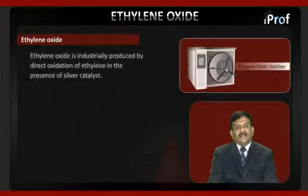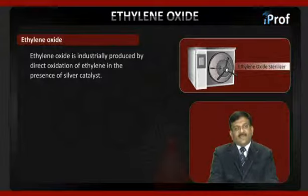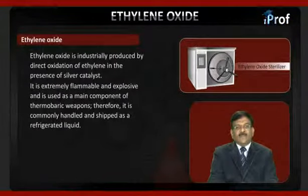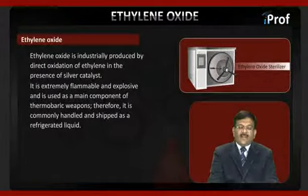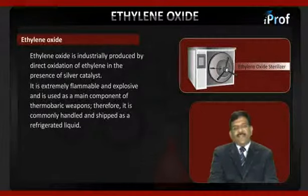Ethylene oxide is industrially produced by direct oxidation of ethylene in the presence of a silver catalyst. It is extremely flammable and explosive and is used as a main component of thermobaric weapons; therefore, it is commonly handled and shipped as a refrigerated liquid.